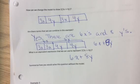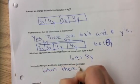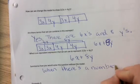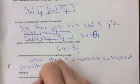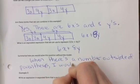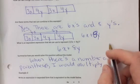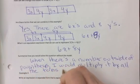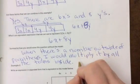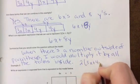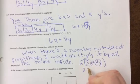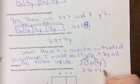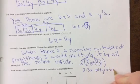Summarize how you would solve this question without the model. When there's a number outside a parenthesis, I would multiply it by all the terms inside. So if I have 2 times 3X plus 4Y, what I'm saying is you take the number outside, you multiply the terms inside the parenthesis both by 2. So I would do 2 times 3X plus 2 times 4Y, which equals 6X plus 8Y.